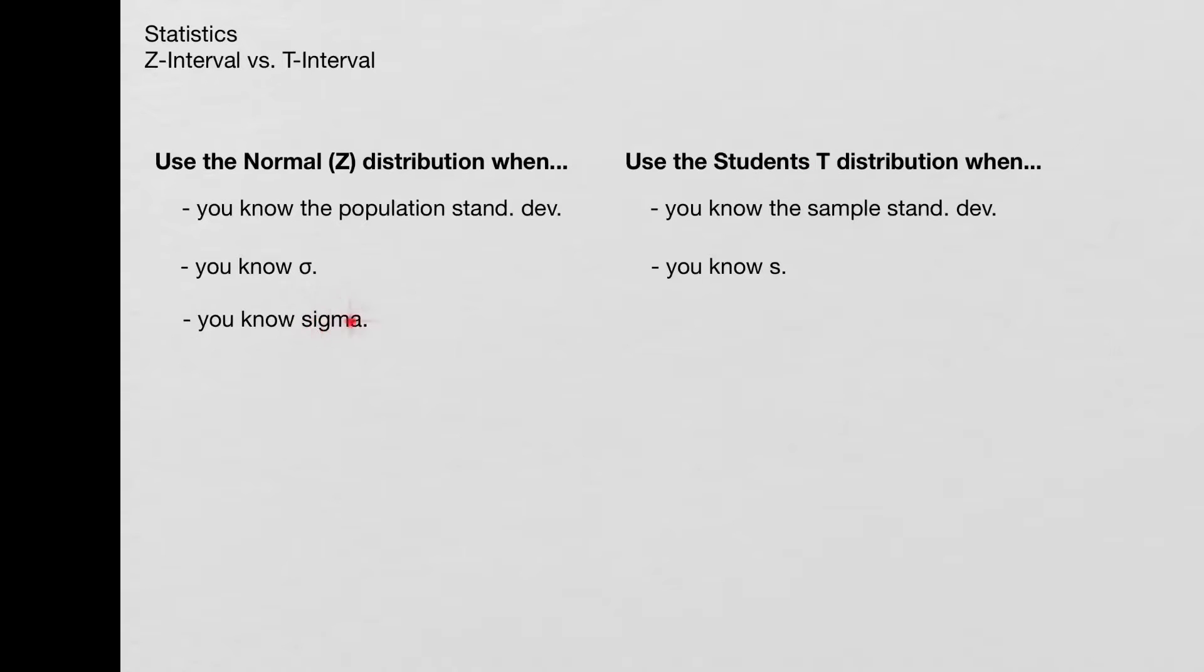Now, it might have the word sigma instead of the symbol for sigma. Again, normal distribution. I don't have an equivalent for that with student t.